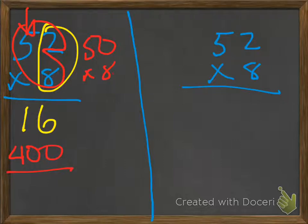How do we know? Well, 8 times 5 is 40. And don't forget to add that extra zero there. So now we can add it up and we get 416.